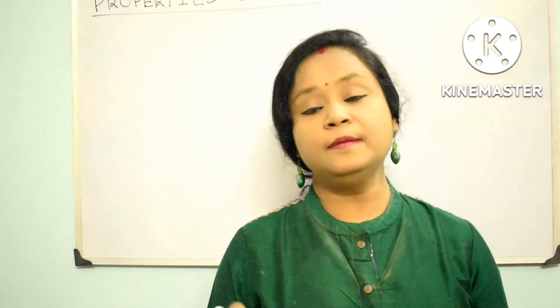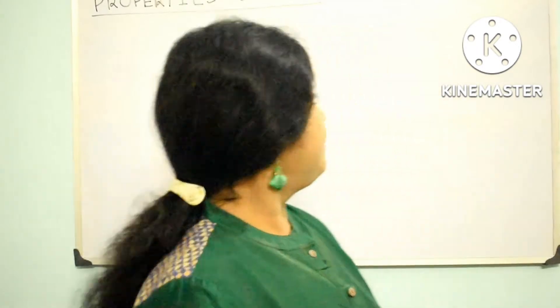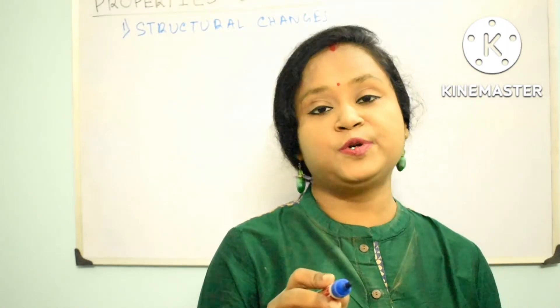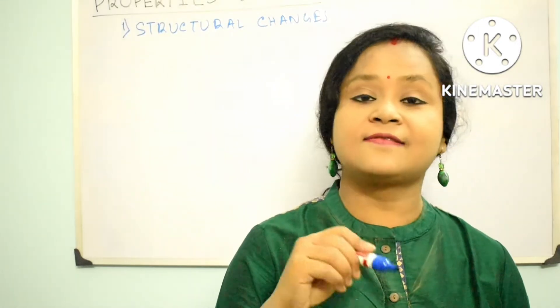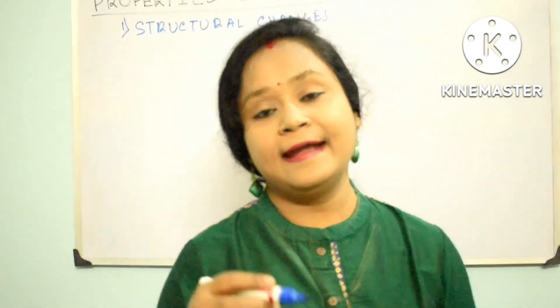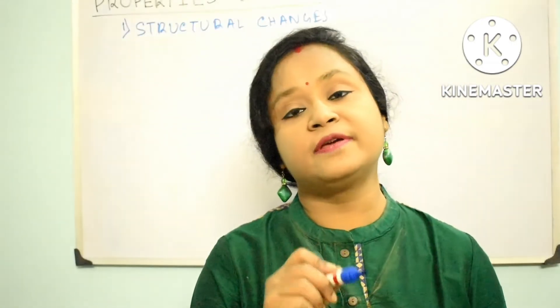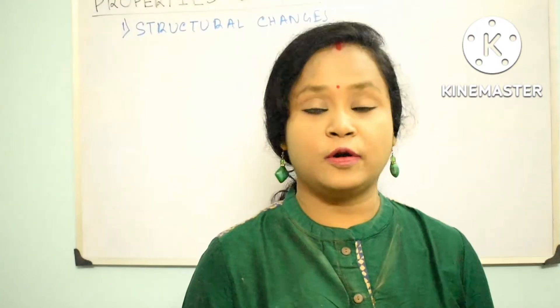After discussing the general properties of DNA, now I am going to discuss the physical and chemical properties of DNA. Point number one is structural changes. Under high salt concentrations and less humidity, DNA changes its shape and size. These changes are referred to as A-DNA, B-DNA, and Z-DNA, which I have already discussed in my previous lecture. Please follow that lecture for sufficient information.